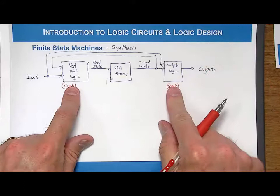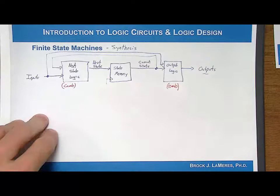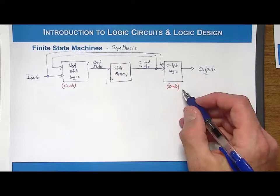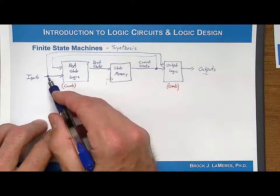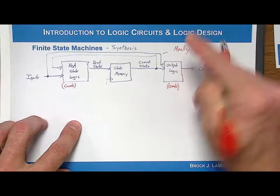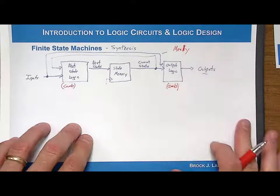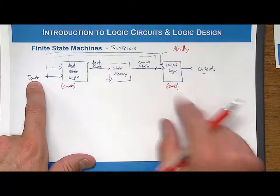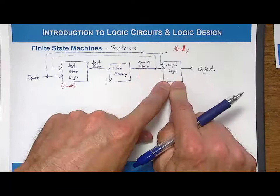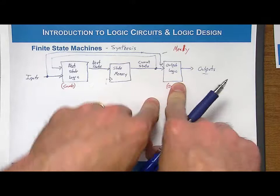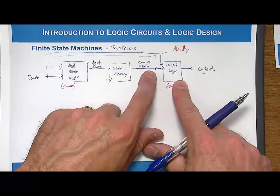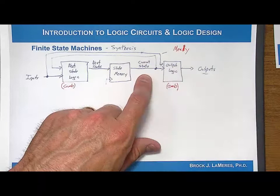There are two general forms of a finite state machine, and they reflect whether the output logic looks at the inputs or not. When the output logic depends on the inputs, this is called a Mealy machine. When the output logic only looks at the current state and doesn't use the inputs, that is called a Moore machine. Mealy and Moore are the names of people, so that's where those terms came from. It just describes how the output logic in these finite state machines is implemented.